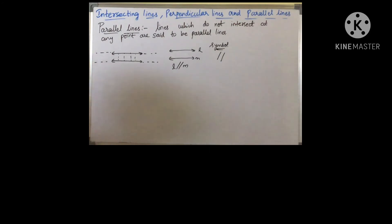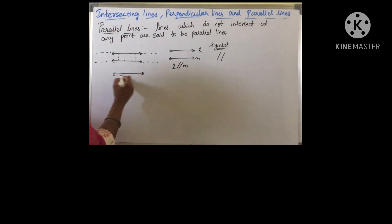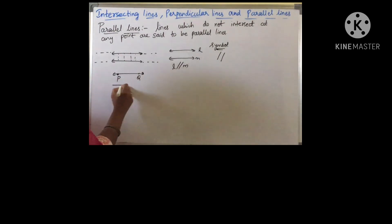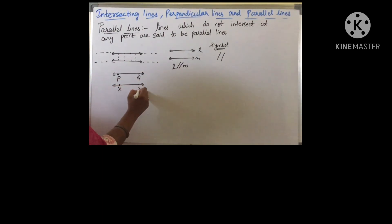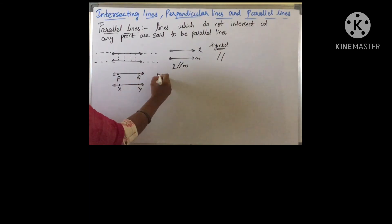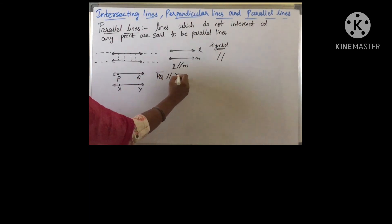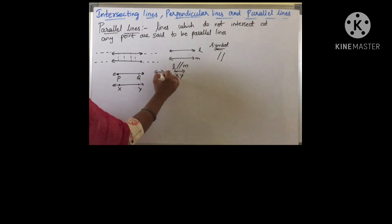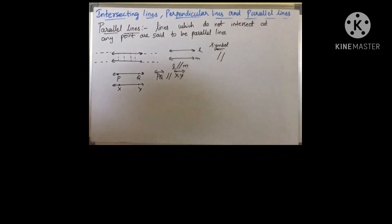Suppose if I represent one line with the two letters P and Q, and another line with X and Y, and these two lines are parallel, then I can write PQ is parallel to XY, or line PQ is parallel to line XY.